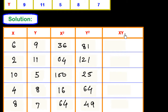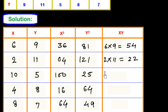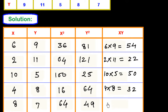Now we find the product of x and y: 6 times 9 is 54, 2 times 11 is 22, 10 times 5 is 50, 4 times 8 is 32, and 8 times 7 is 56.